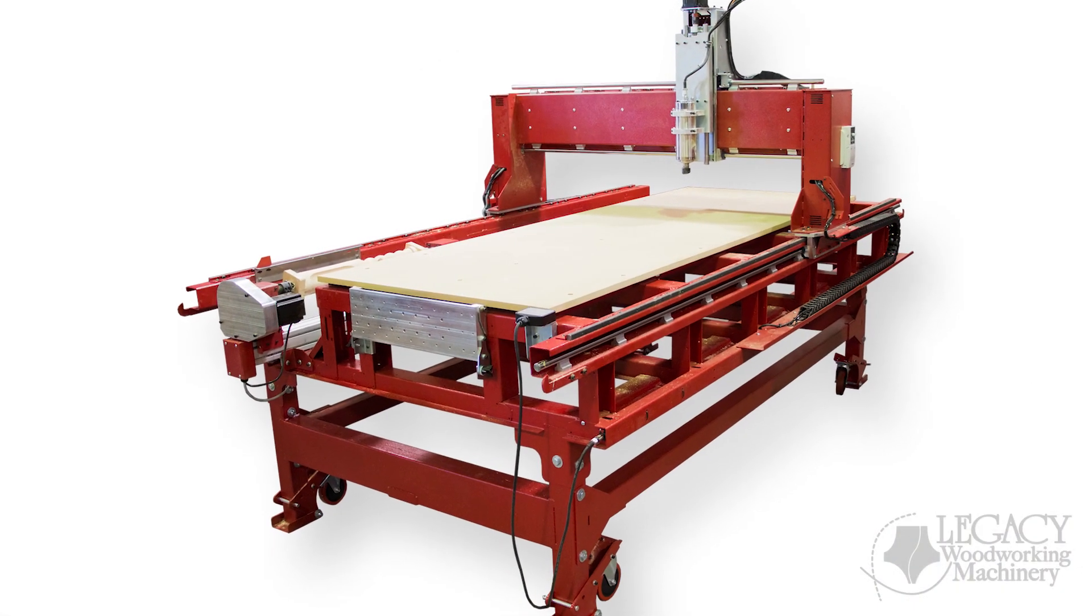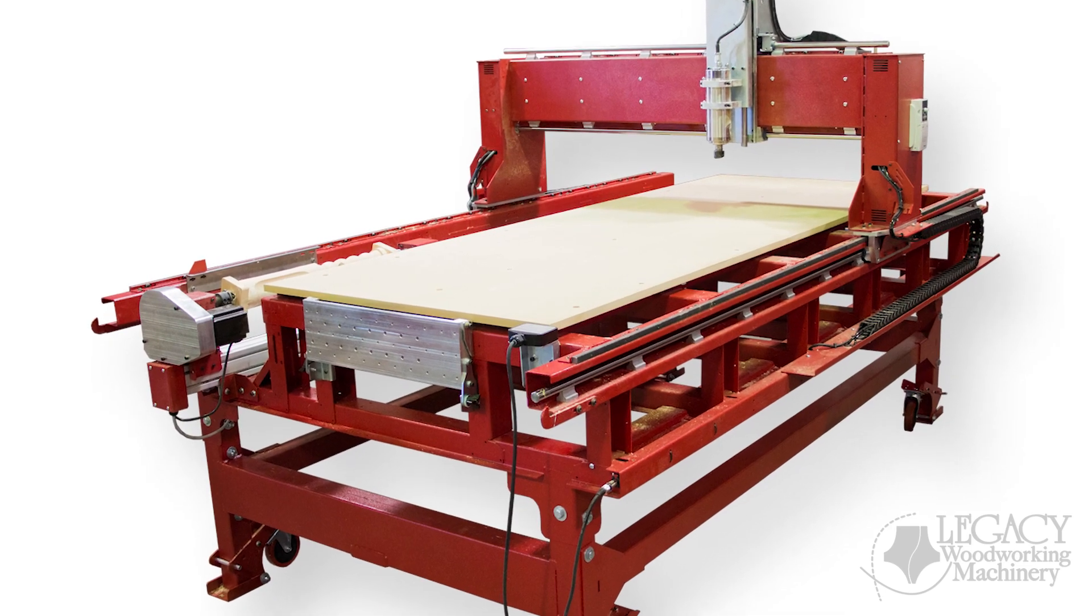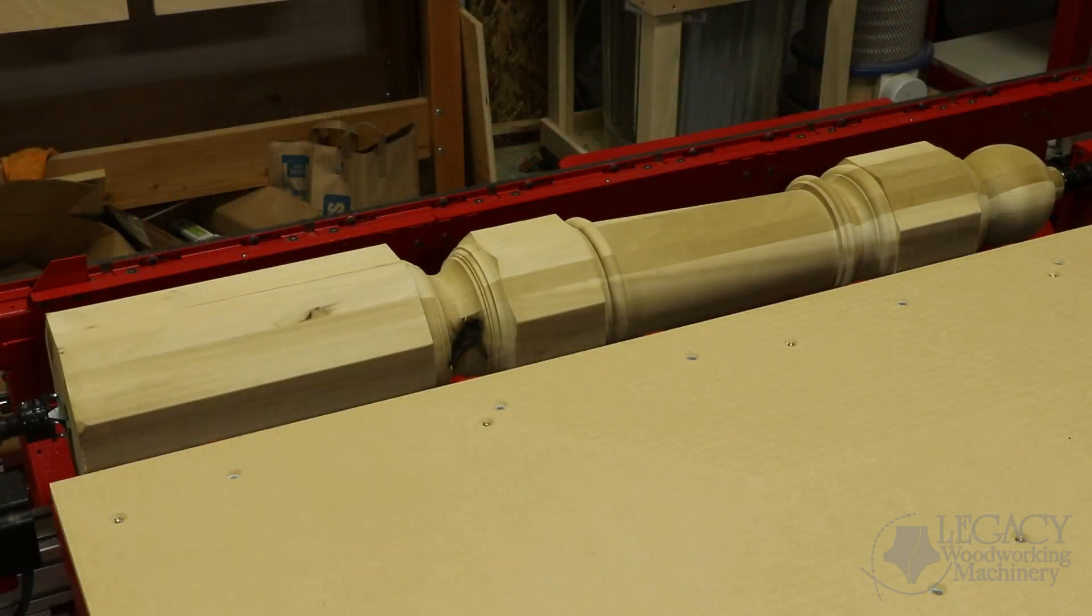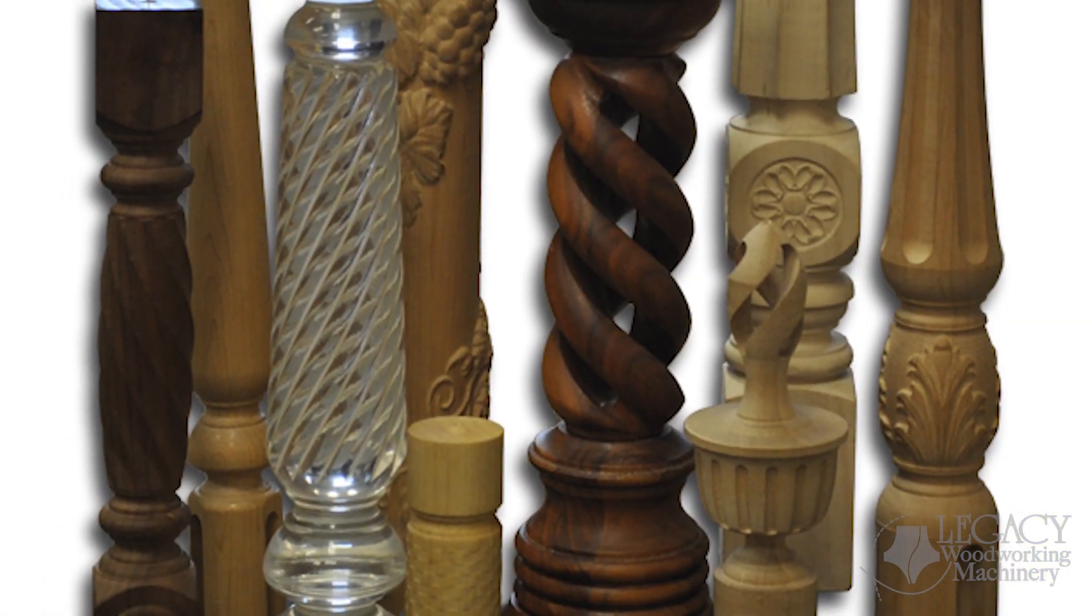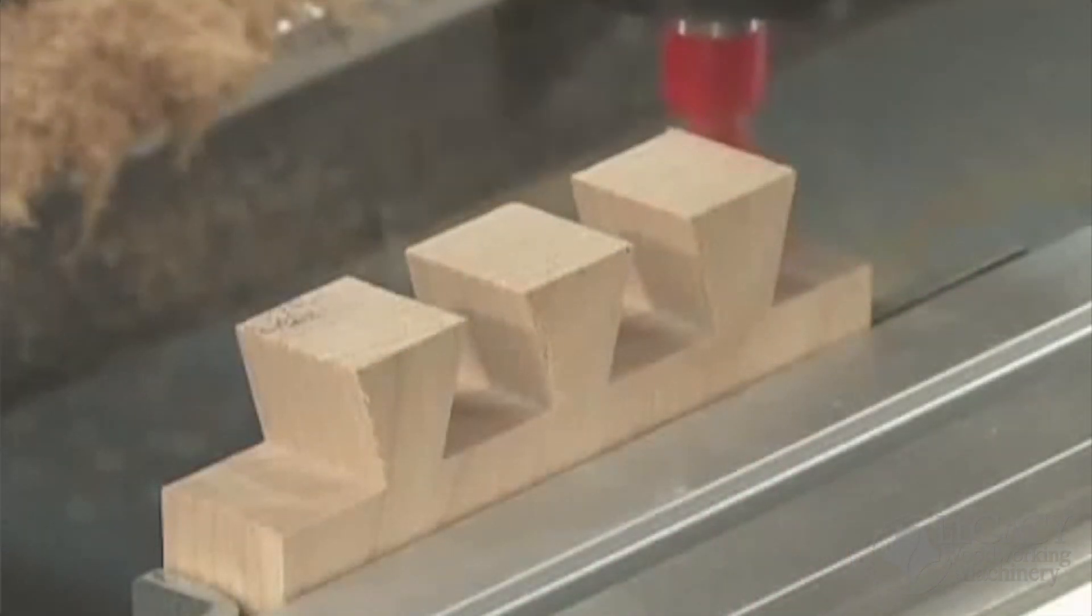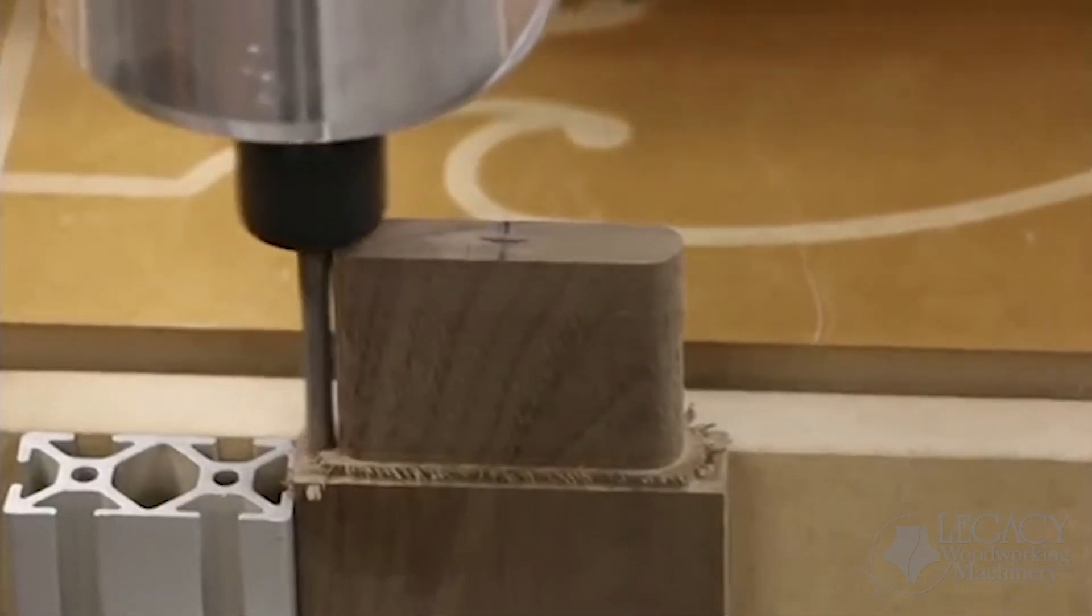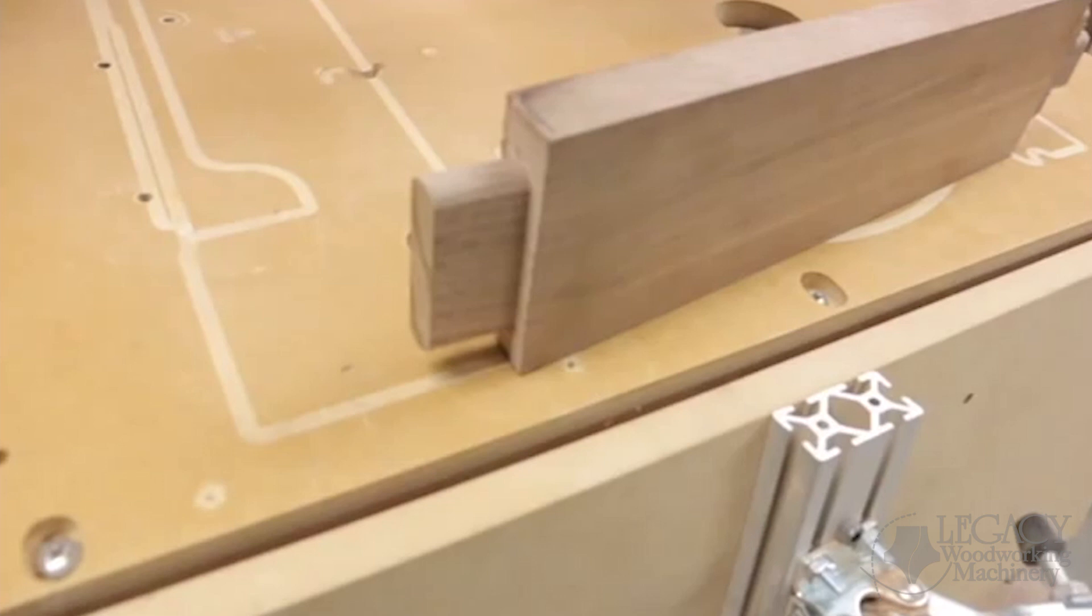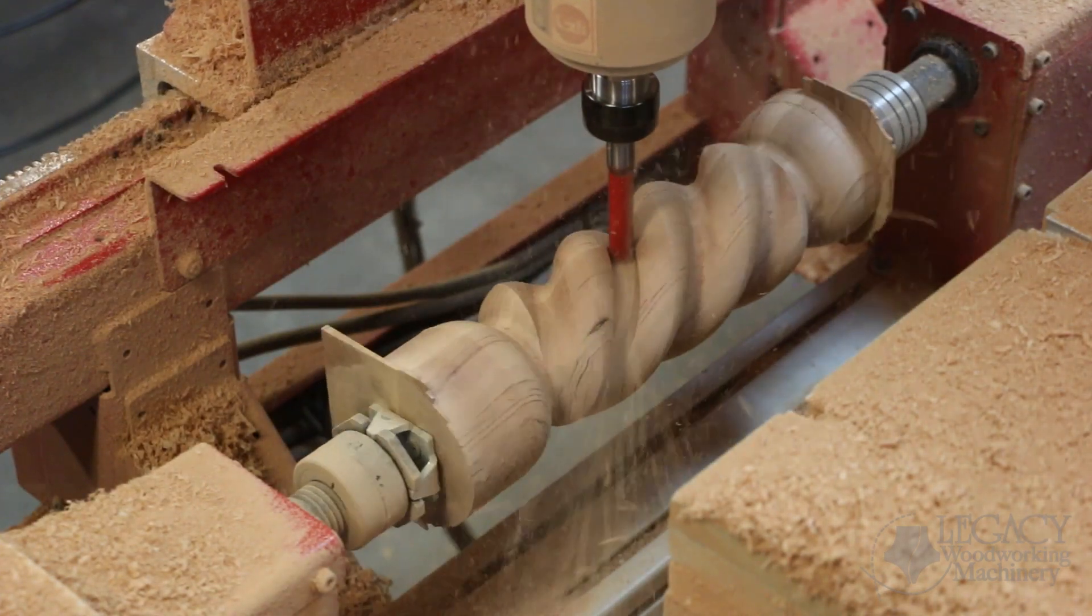You can see this experience in the CNC woodworking equipment we produce today. Each Legacy CNC system incorporates an integrated spindle milling system, allowing the operator to produce turned round spindles, index spindles, spiral spindles, and rotary carved spindles, in addition to the 2D and 3D parts produced on other CNC router systems. You can also add precision joinery such as sliding dovetail joints or mortise and tenon joints without the need to move to a second machining center, saving you time and handling. These processes are unique to Legacy.